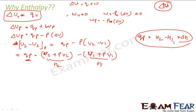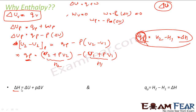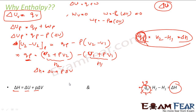At constant pressure, the heat transferred is nothing but delta H. Delta H is a new term — it is delta U plus P·delta V, because H equals U plus PV. At constant pressure, the heat supplied or heat transferred equals delta H, and this delta H is the change in enthalpy. H is the enthalpy, and that is why we have coined a new term called enthalpy.